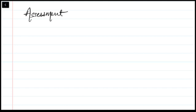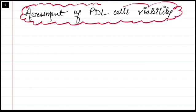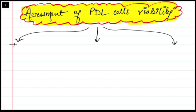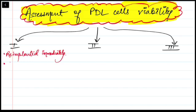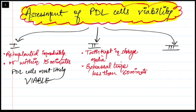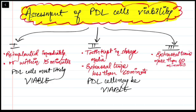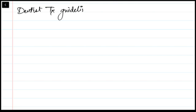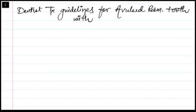The outcome we are most worried about is ankylosis whenever we reimplant the tooth. Assessment of PDL cell viability is very critical. We can divide tooth status into three categories: first, reimplanted within 15 minutes — PDL cells are most likely viable with the least chance of ankylosis. Second, kept in storage media or extra-oral for up to 60 minutes — PDL cells may or may not be viable. Third, extra-oral time more than 60 minutes — PDL cells are no longer viable.